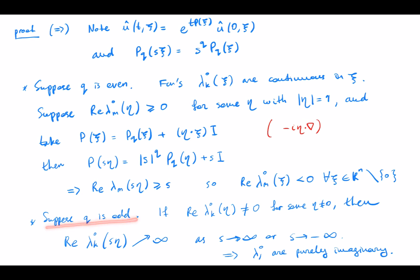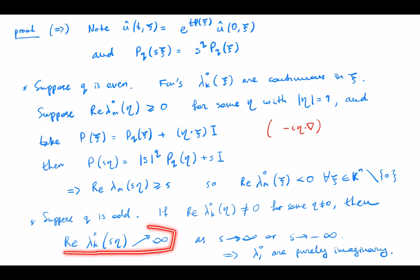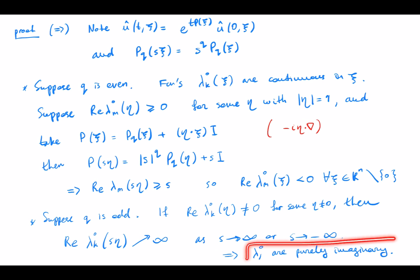Now suppose that q is odd. If q is odd and the real part of some eigenvalue is non-zero, then because q is odd, by scaling we can make this eigenvalue go to infinity by choosing either s going to infinity or s going to minus infinity. So the eigenvalues of the principal symbol must be purely imaginary.